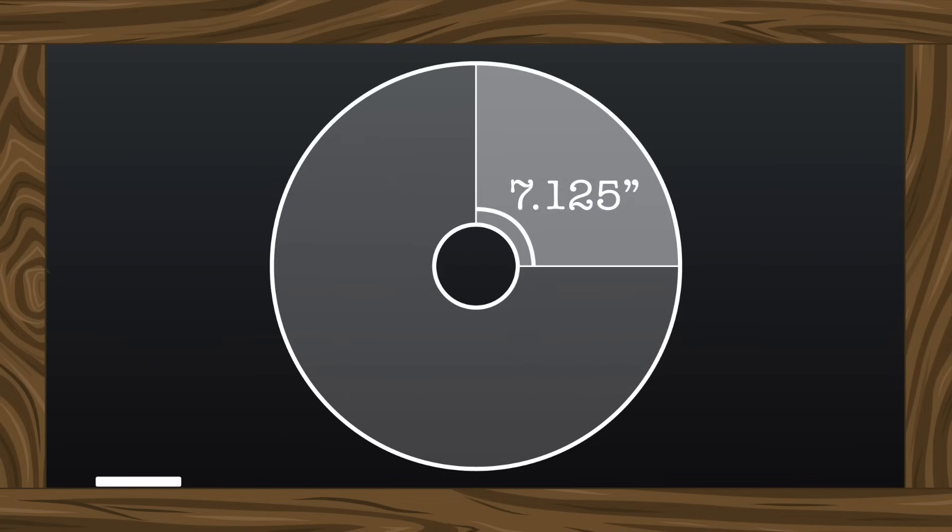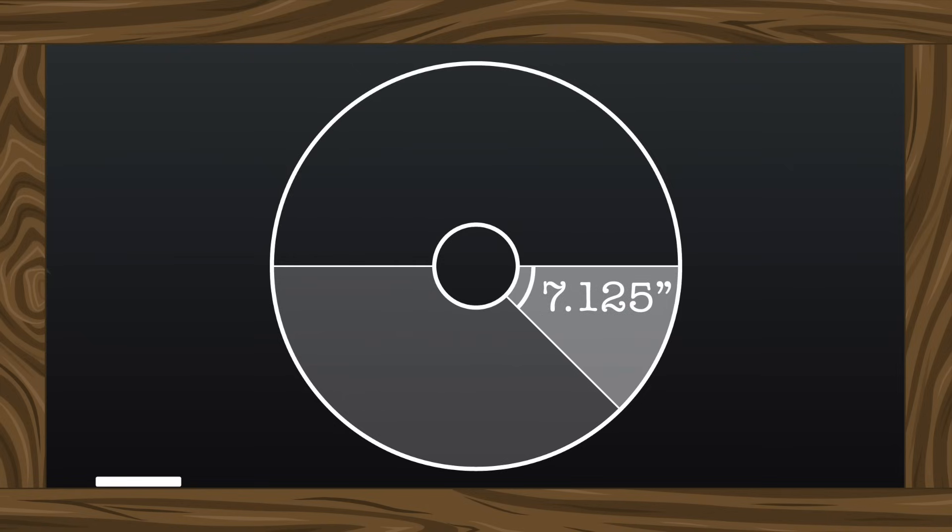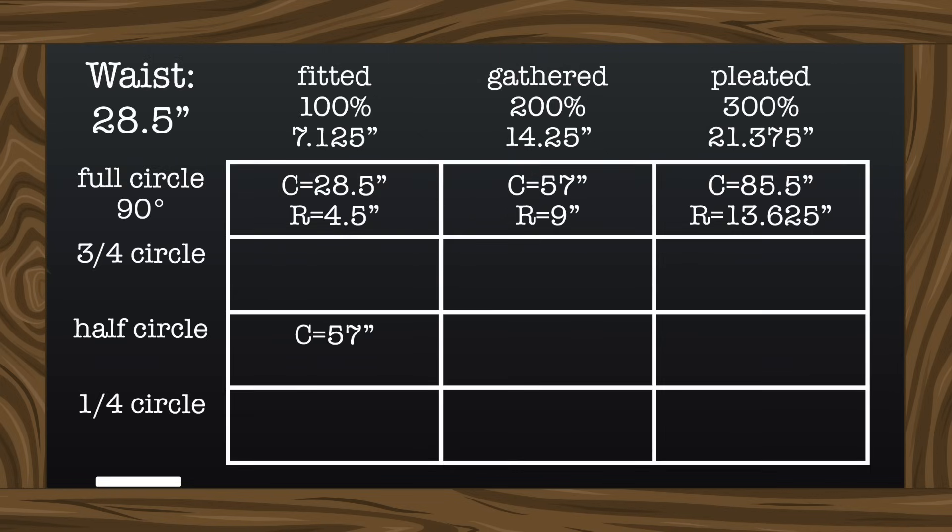So instead of this curve equaling 7.125 inches, actually half of that needs to measure 7.125, which means that this full theoretical inner circle needs to measure double 28.5 inches, making it 57 inches. So, finding the radius of 57 inches, we come to 9 inches.